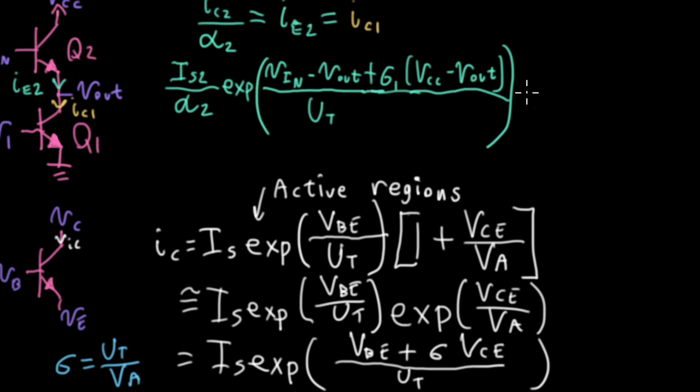On the right hand side, I'm going to have IS1 exp. And then I'll have V1 minus ground plus sigma2 Vout, which is the collector current minus ground. This is all over UT.